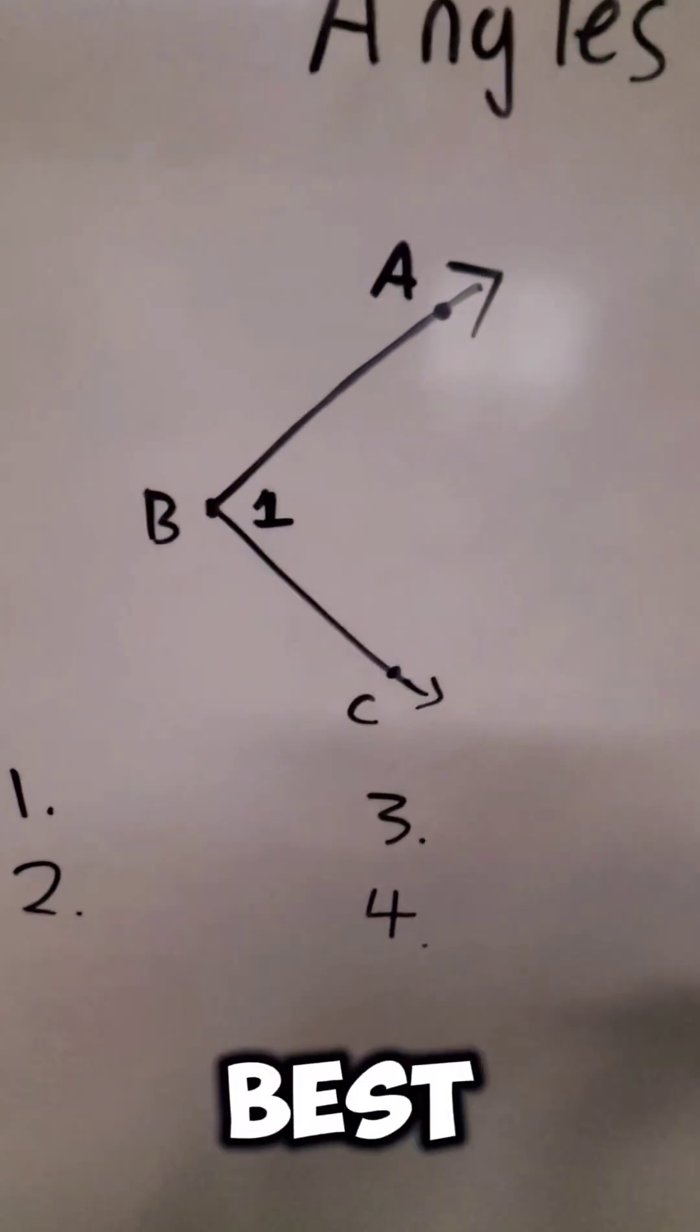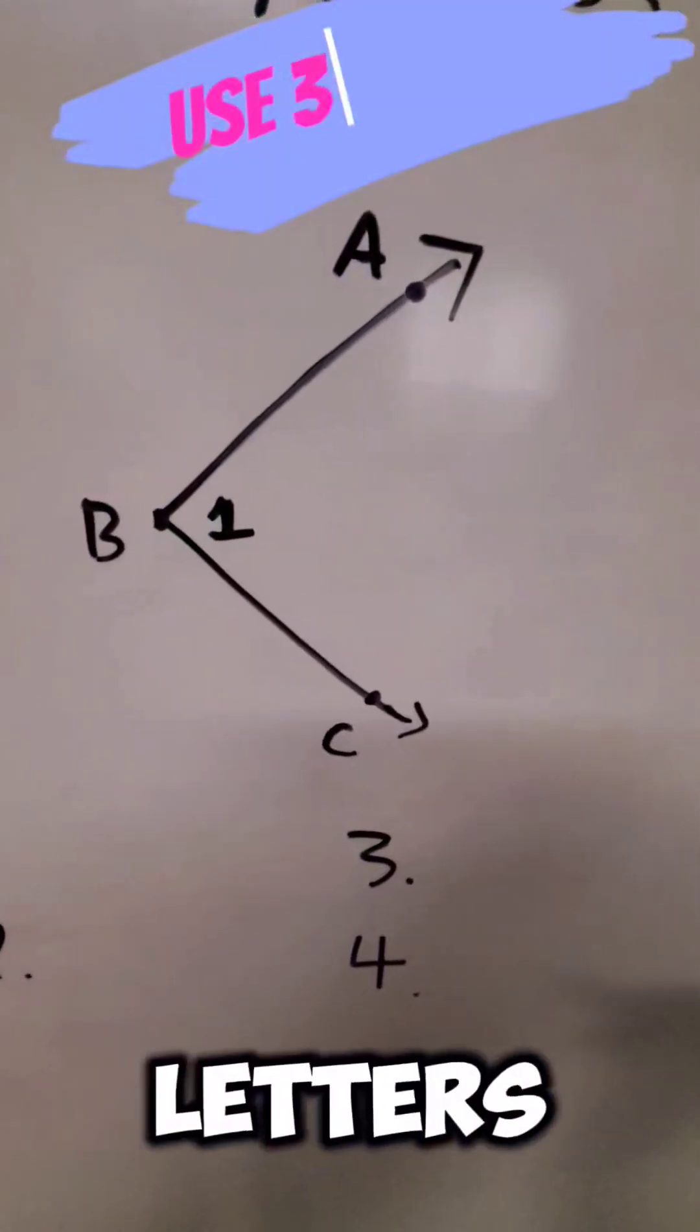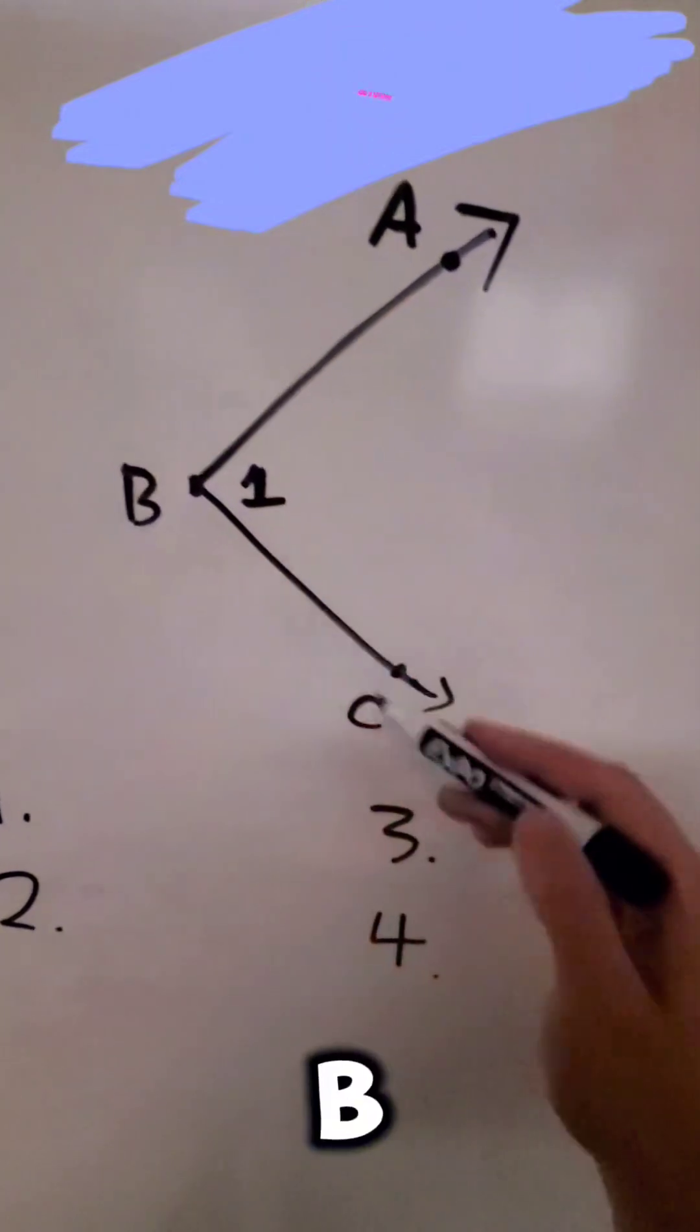Now the easiest and best way that we're going to be able to do this is by using three letters. Now notice we have A, B, and C here.